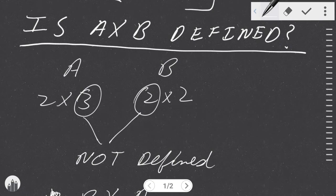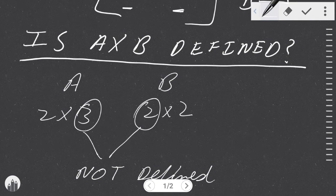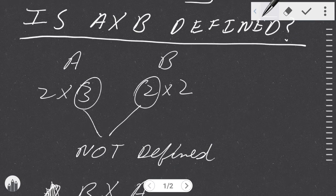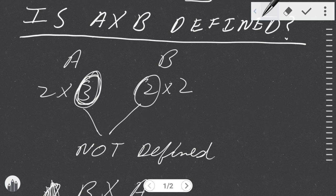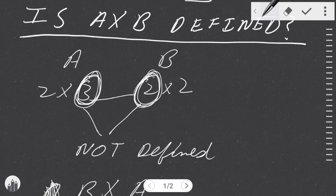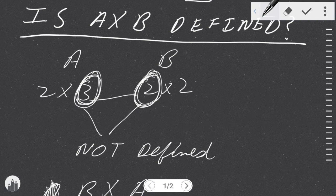If you have an A matrix which has two rows and three columns, and you have a B matrix which has two rows and two columns, because you have three columns in A, which is more than two rows in B, it would be considered not defined. If these two values were the same, then you could have a defined matrix.